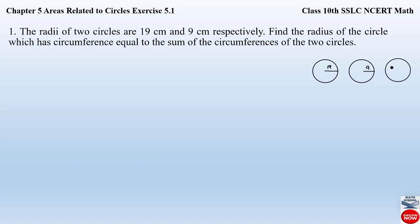There is another circle whose radius we have to determine, where the circumference of this circle — circumference is the length of the circle — is given by 2πr. The sum of the circumferences of the two given circles will give you the circumference of the required circle whose radius has to be determined.